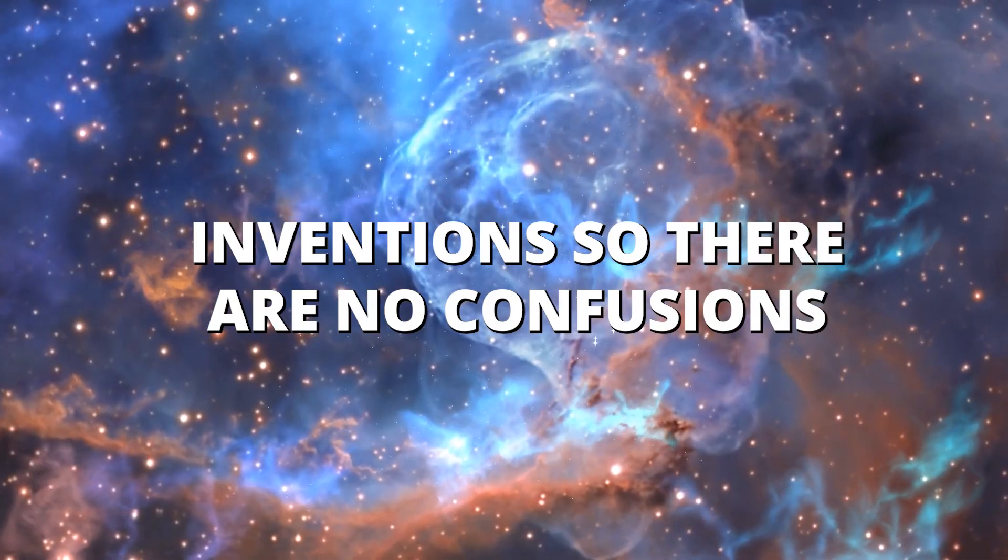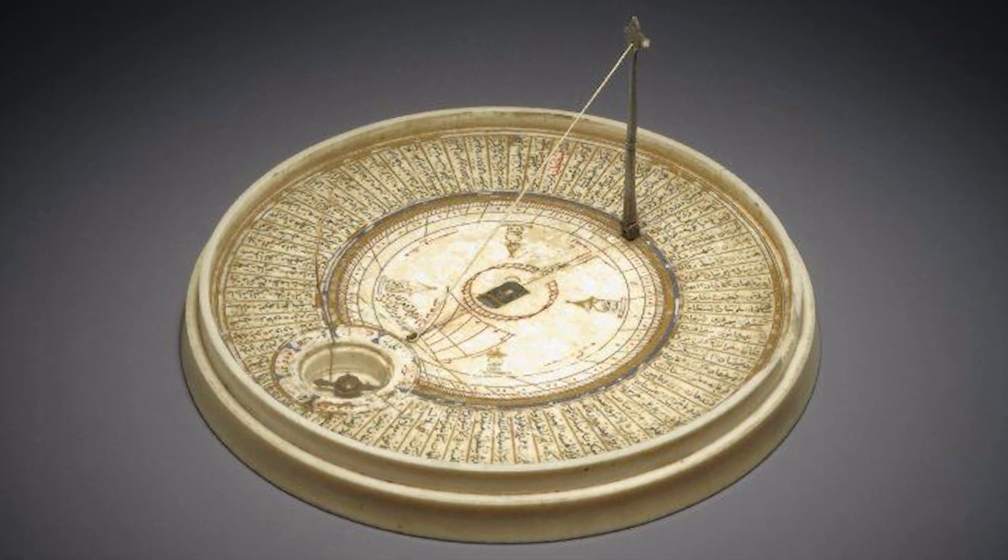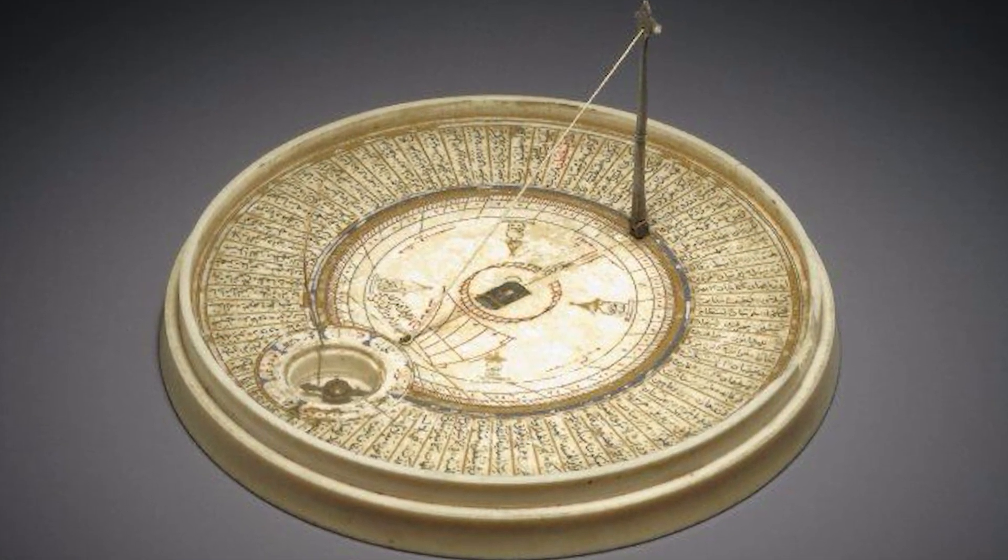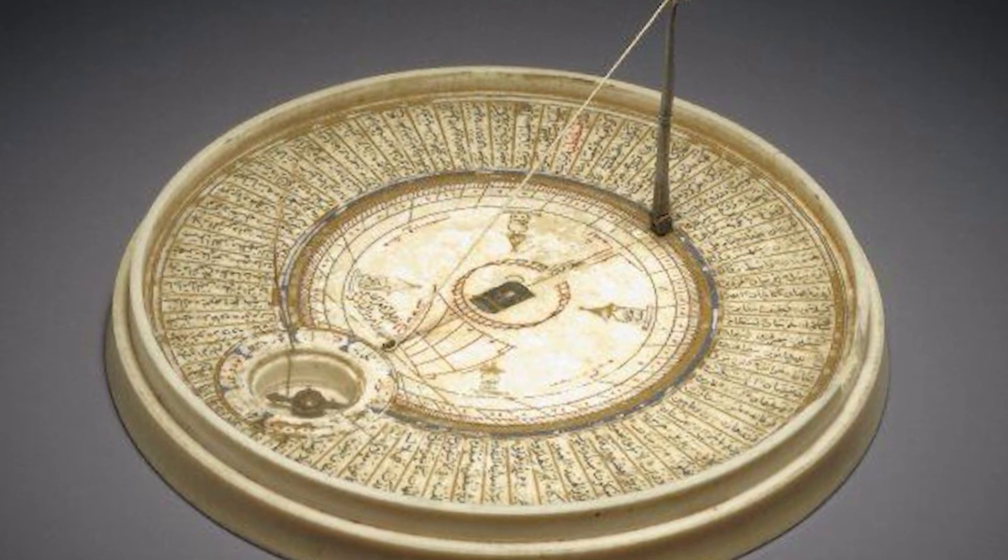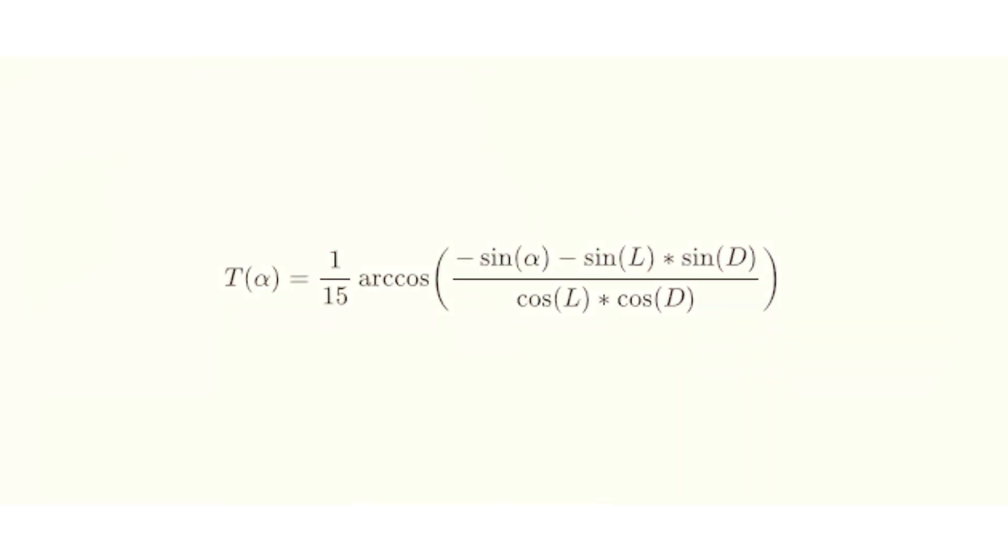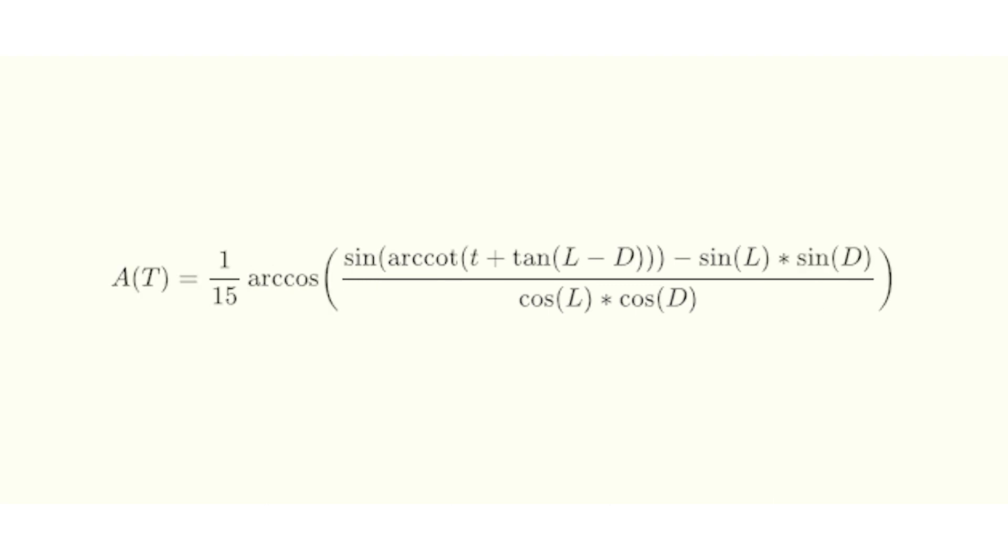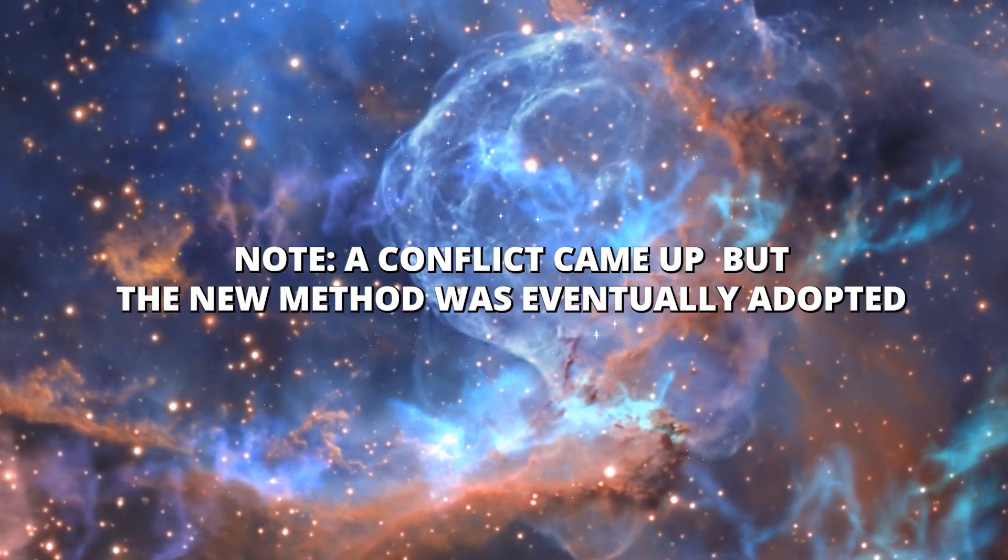Inventions so there are no confusions. Method of calculating prayer times. The sun dial is an instrument to see where the sun is in the sky, which tremendously helped the early Muslims to determine the daily prayer times. However, thanks to the intellect of early Muslims, they were able to develop formulas to calculate all the times of the prayers throughout the day in advance. Note, a conflict came up, but the new method was eventually adopted.